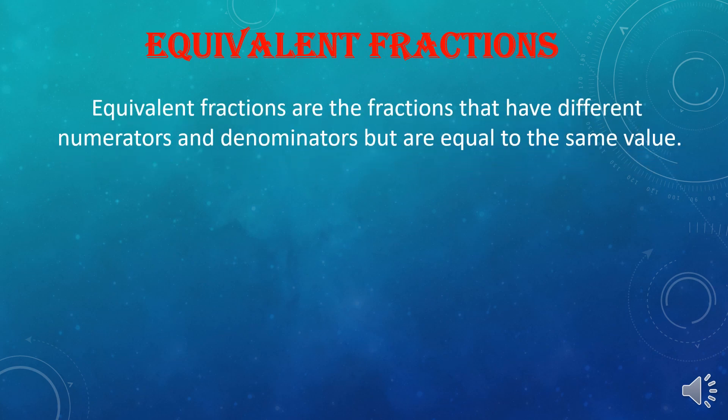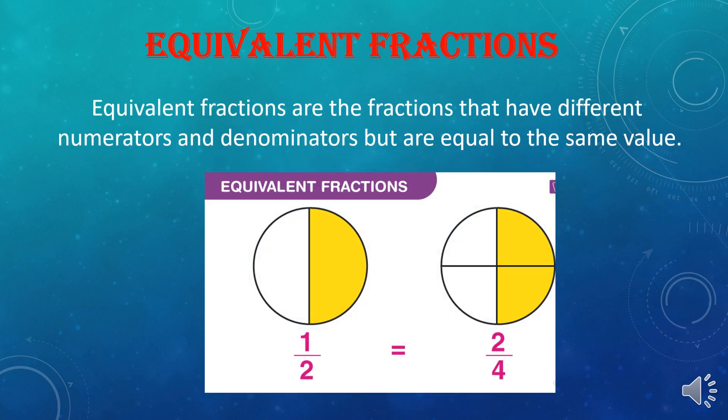Equivalent Fractions are fractions that have different numerators and denominators but are equal to the same value. As shown in the picture, 1 by 2 is equal to 2 by 4. The numerator and denominator are both different, but the value is equal — which is one half.